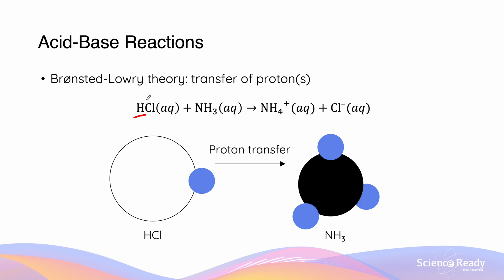In this case, hydrochloric acid is transferring its proton to the NH3 ammonia, which forms ammonium and the leftover chloride ion. And we can see that here from the diagram.